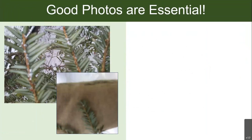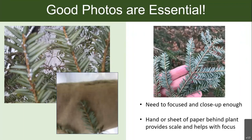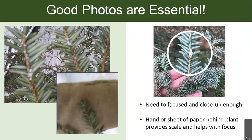Remember to save your changes. The pictures you take are really important when making real species records. On the left I have some blurry pictures of hemlock woolly adelgid — it's hard to tell whether there's just snow on the branches or woolly masses at the bases of the needles. On the right, an in-focus example makes it much easier to tell — you can zoom in and clearly see the white woolly masses. To help you take pictures like this, use a hand or a sheet of paper behind the branch so that the camera focuses on it; the paper also provides scale.